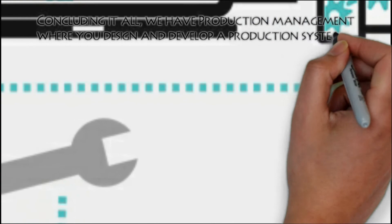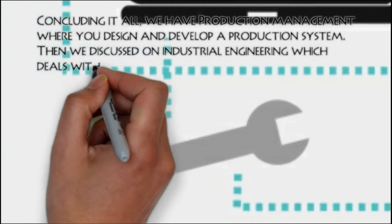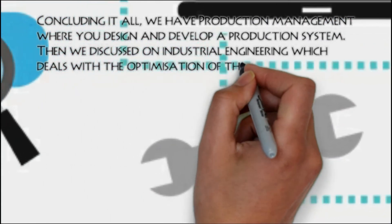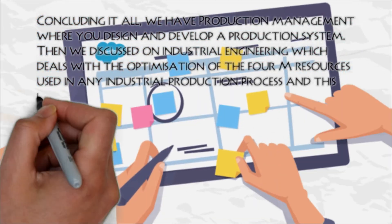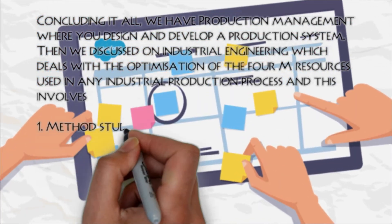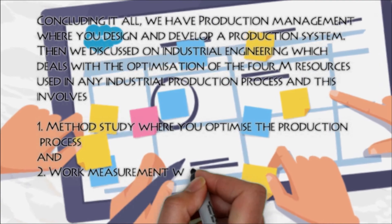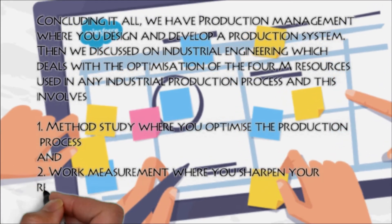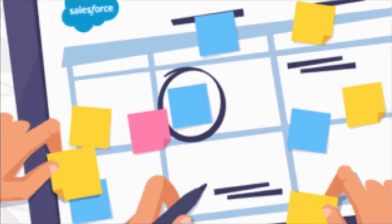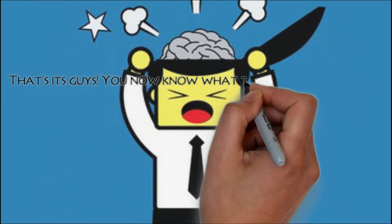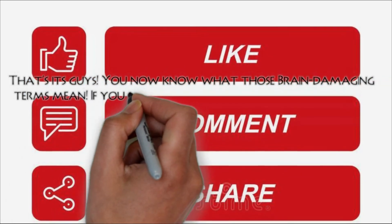Concluding it all: we have production management, where you design and develop a production system. Then we discussed industrial engineering, which deals with the optimization of the 4M resources used in any industrial production process. This involves: one, method study — where you optimize the production process; and two, work measurement — where you sharpen your resource utilization. That's it, guys — you now know what those brain-damaging terms mean.